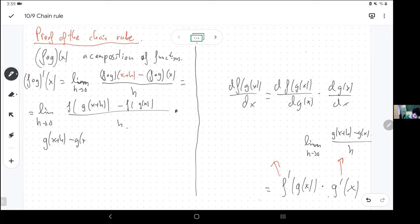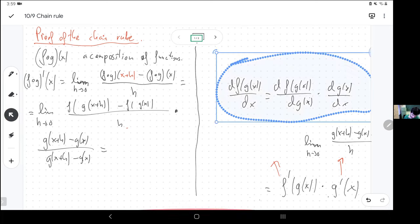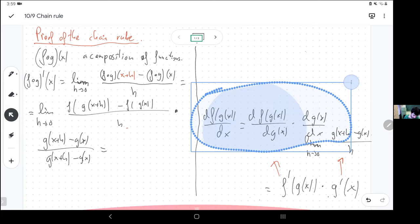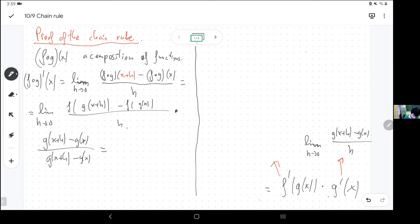Because that will give me, if I combine this numerator and this denominator, I'm going to get g prime of x. And then I have to figure out what's happening to the other stuff.